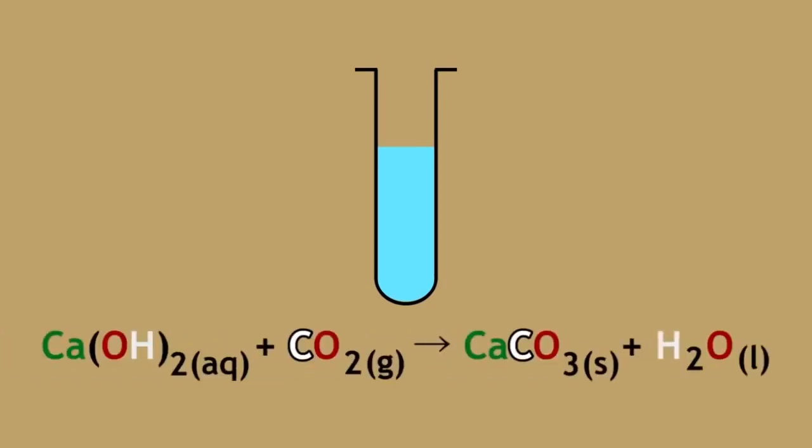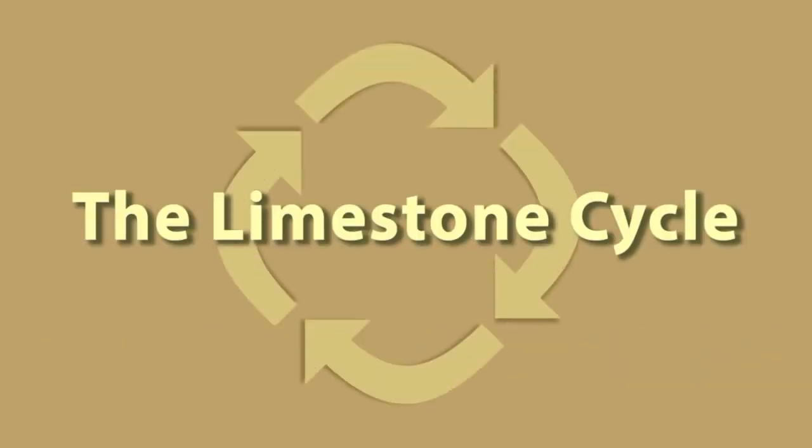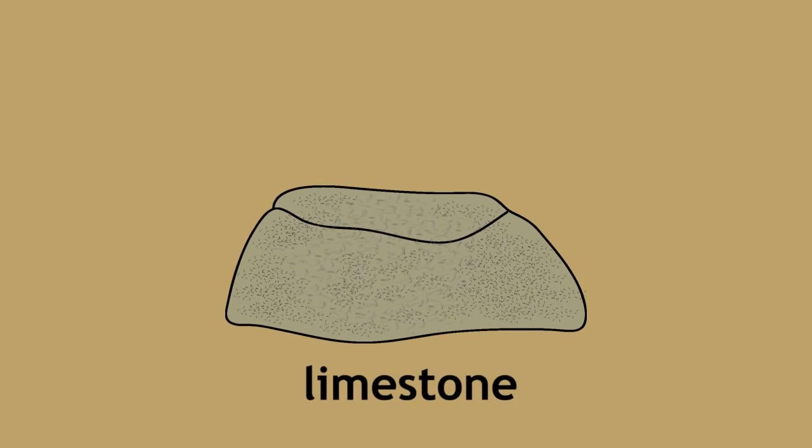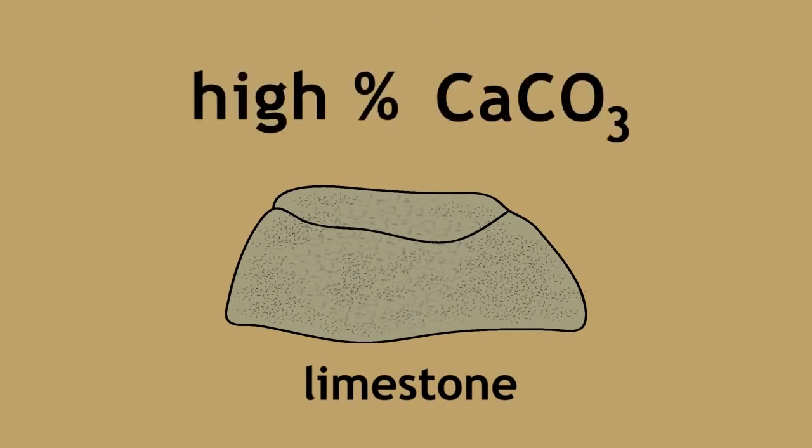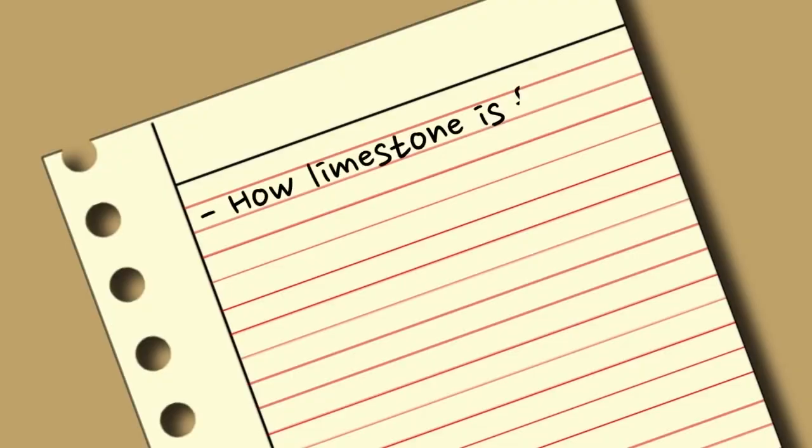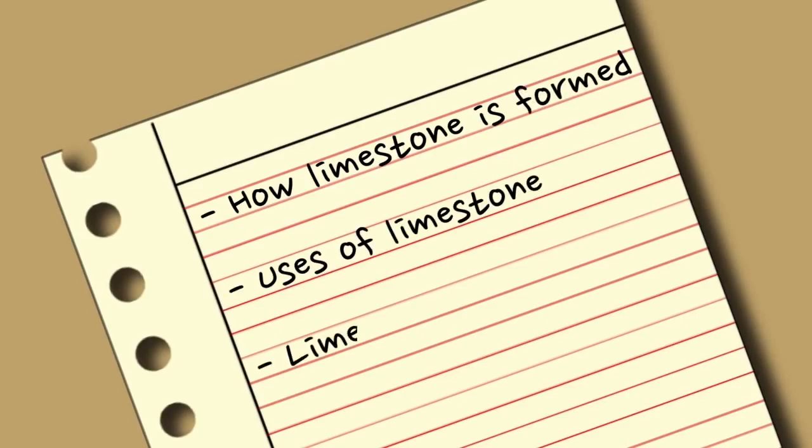This reaction is in fact a part of a much bigger cycle called the limestone cycle. Limestone is a type of sedimentary rock with a high percentage of calcium carbonate. In this lesson, we will learn about how limestone is formed, some uses of limestone, and the limestone cycle.